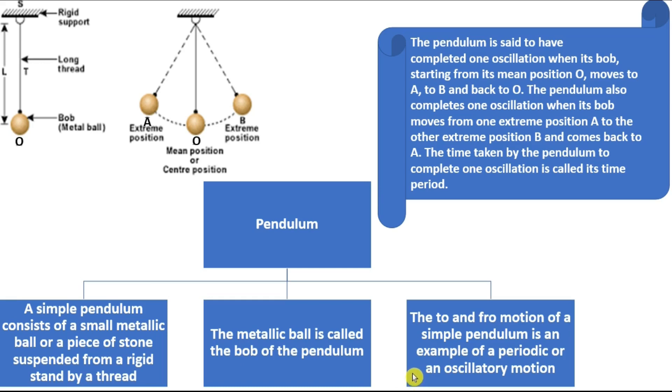The to and fro motion of a simple pendulum is a perfect example of a periodic and an oscillatory motion. The pendulum is said to have completed one oscillation when the mass or the bob starts from its mean position O in the diagram. It goes to A, from there from A it goes to B, and again it comes back to O. This is one oscillation. Or the other way oscillation can happen is that if I started from the extreme position A, it goes to B and it comes back to O. The time taken for one oscillation by the pendulum is called the time period of the pendulum.